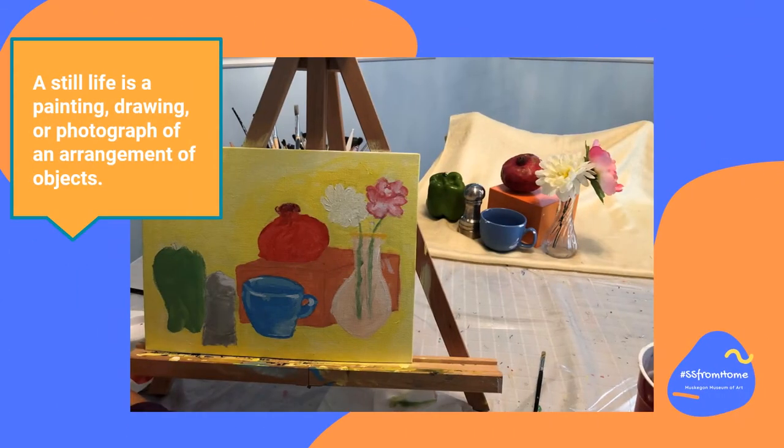A still life is a painting, drawing, or photograph of an arrangement of objects. A lot of times in art, you'll find that still lives include objects like fruit, flowers, candles, and dishes. The artist will set these objects up to their liking, usually on top of a cloth or bed sheet of some sort, and then they'll draw, paint, or photograph what's in front of them.